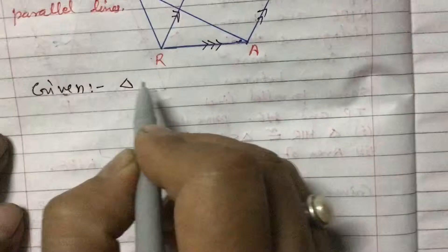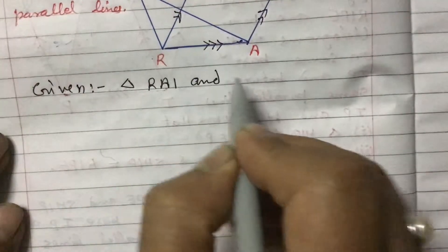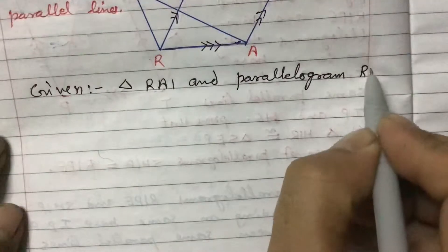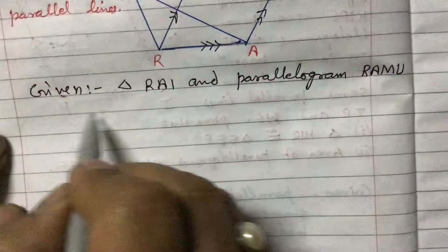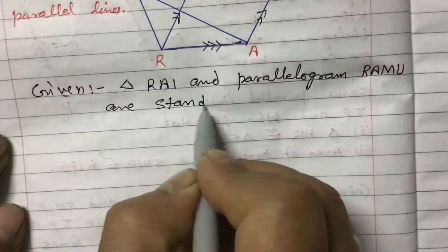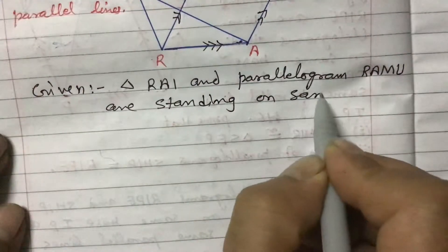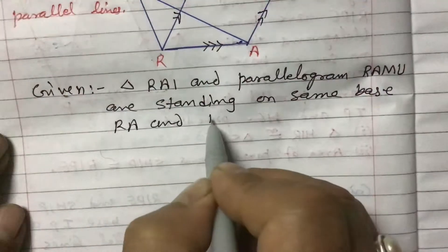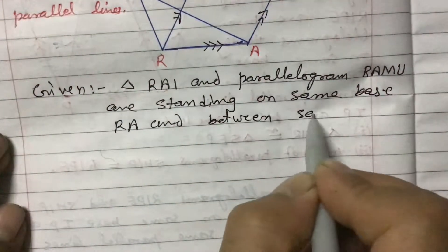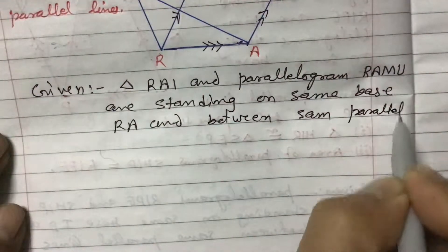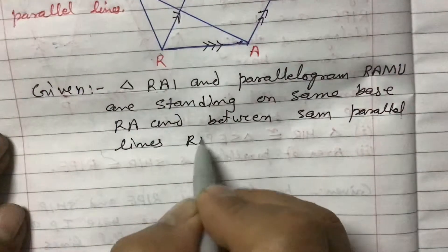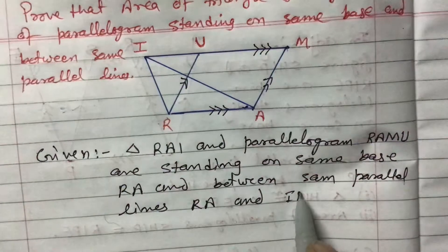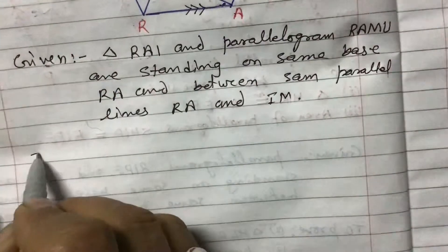In the Given section, we write: Triangle RAI and parallelogram RAMU are standing on the same base RA and between the same parallel lines RA and IM.